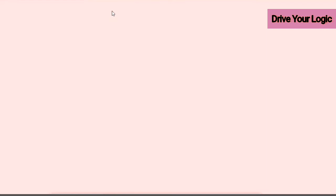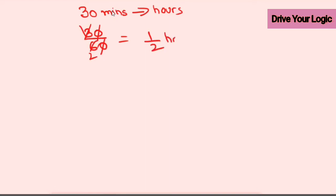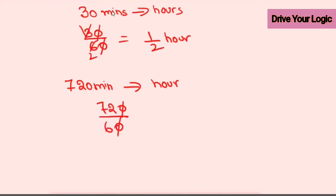Let me show you minute to hour. Take 30 minutes going back to hours: divide by 60. 30 ÷ 60 — cancel zeros, 3 ÷ 6 = 1/2. So 30 minutes equals half an hour. One more: 720 minutes to hours — 720 ÷ 60, cancel zeros, 72 ÷ 6 = 12. So 720 minutes equals 12 hours.